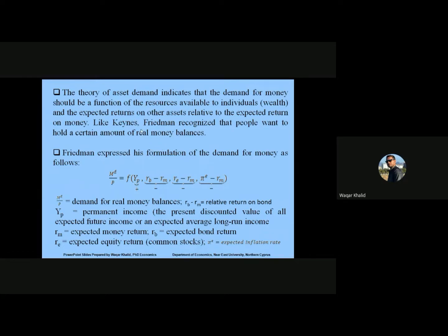The basic formulation of Friedman's theory is: Md/P = f(Yp, rb − rm, re − rm, πe − rm), where Md/P is the real money balance. Yp represents permanent income — the present discounted value of all expected future income, i.e., the expected average long-run income. rm is the expected return on money, rb is the expected return on bonds, re is the expected return on equity, and πe is the expected inflation rate.